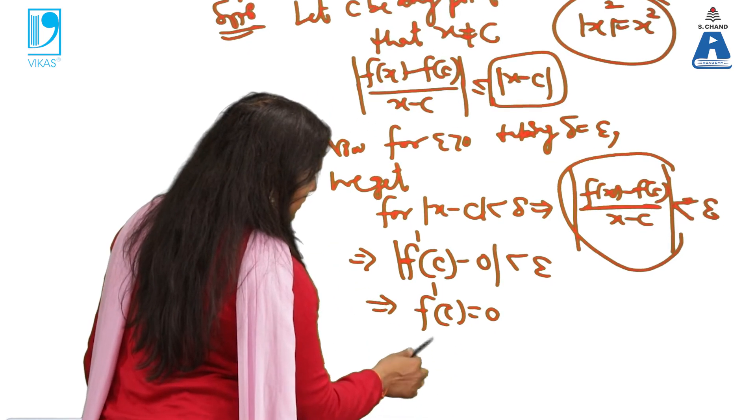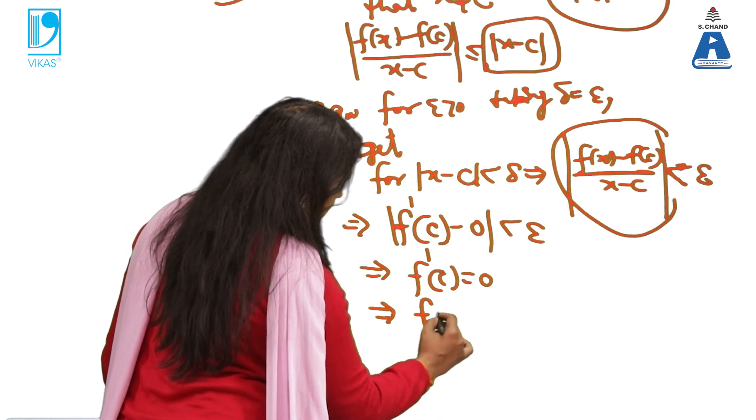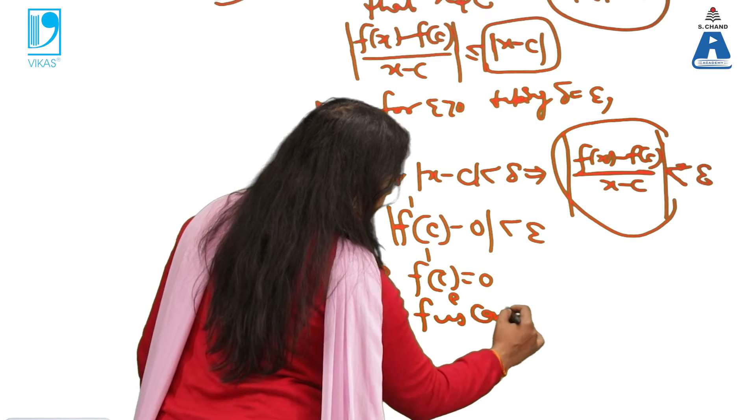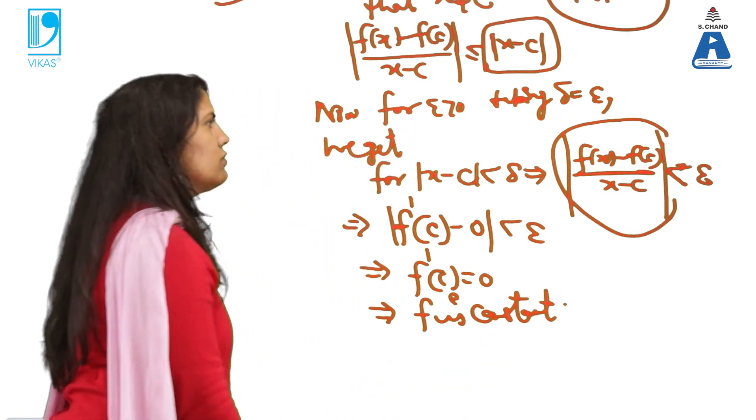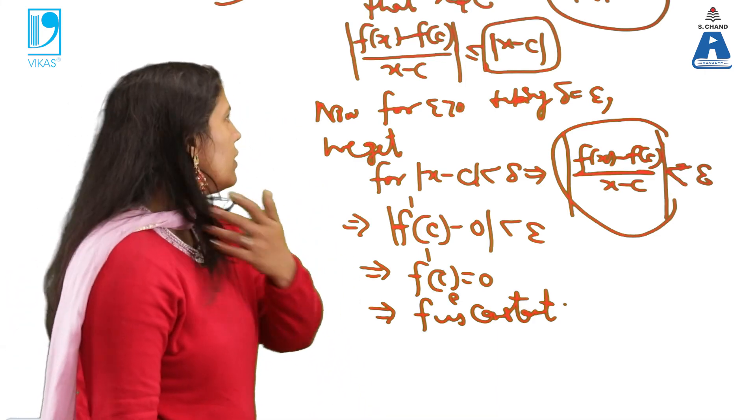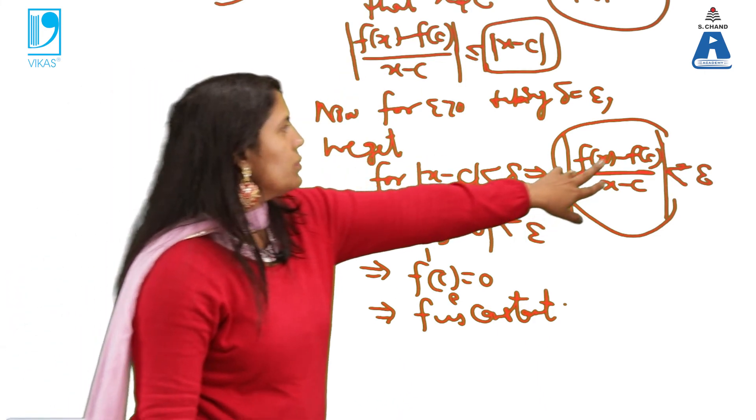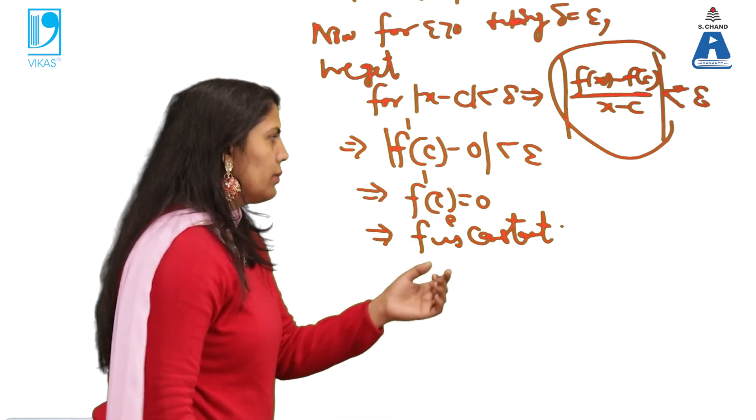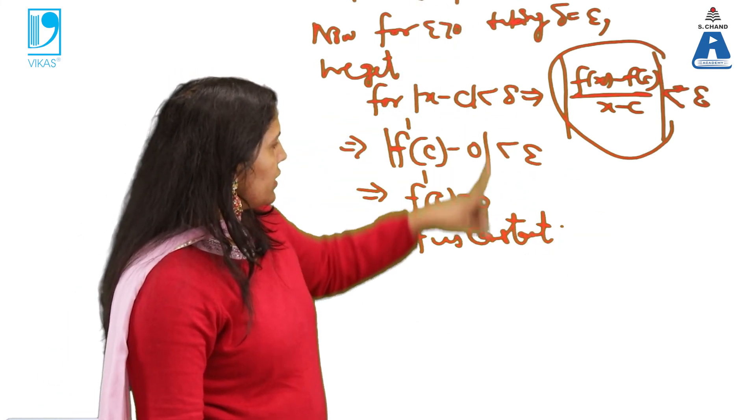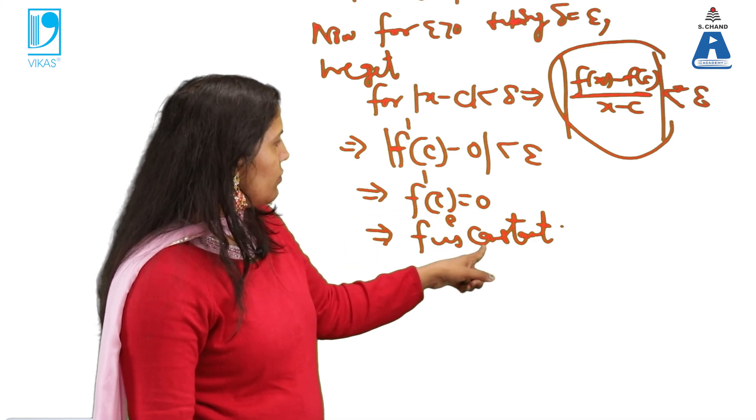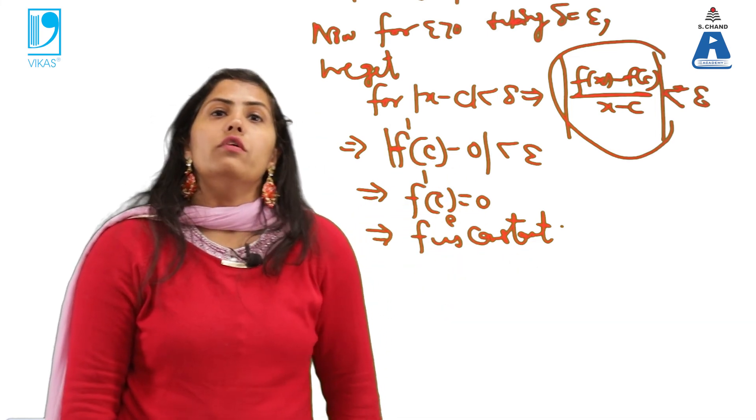So finally what we are getting that the derivative, this is f'(c) minus 0 less than epsilon, implies f'(c) is 0. And finally, we can say that my function is constant because derivative is 0 only when the function is constant. So this is how we apply the derivative concept here and mean value theorem concept because derivative we are using, function is derivable, continuous. And finally, we are getting that on that condition applying this theorem we can say that f is constant.